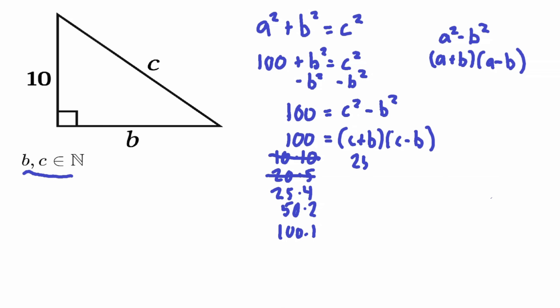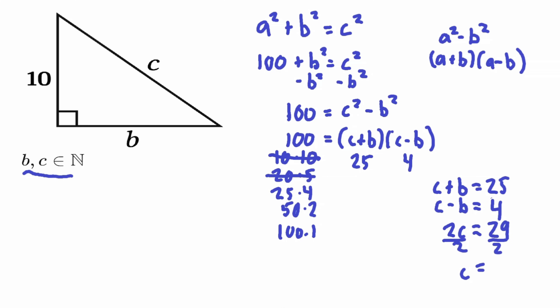Now 25 × 4: c + b = 25 and c − b = 4. Note that c + b is always larger than c − b since we're adding versus subtracting, so the bigger factor always goes on the left. Adding the equations gives 2c = 29, so c = 14.5 — not an integer, so we cross this out as well.